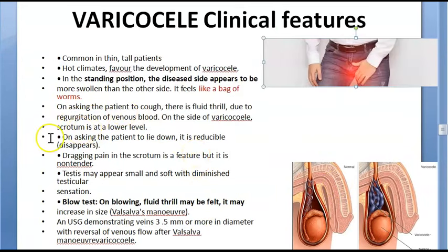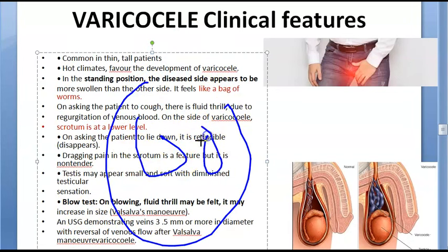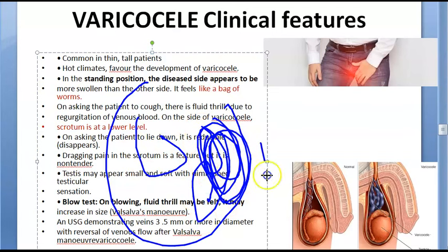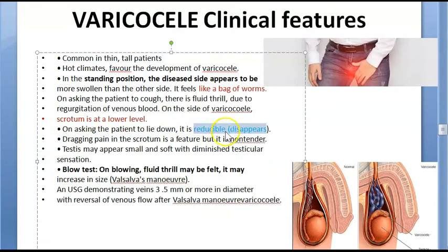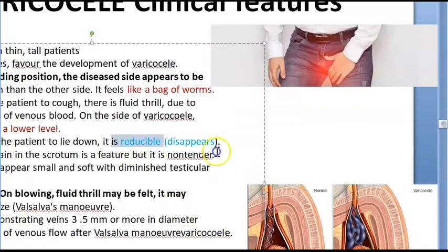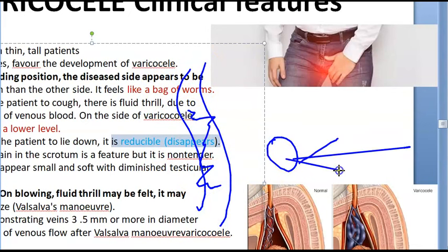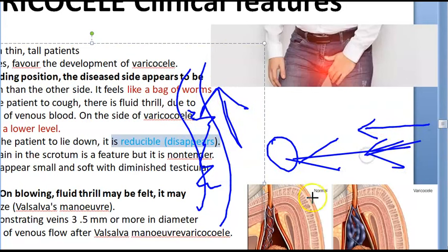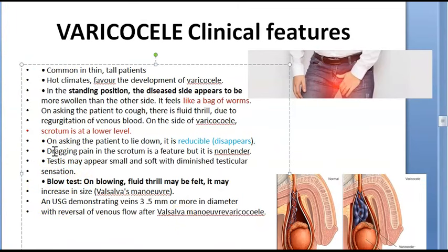On the side of the varicocele, the scrotum appears slightly lower. When the patient lies down, the varicocele is reducible — it disappears because venous drainage occurs when no longer draining against gravity. This can mimic a hernia presentation. There is cough impulse and fluid thrill, and it is reducible on lying down.